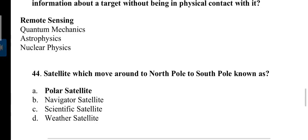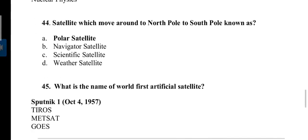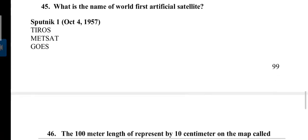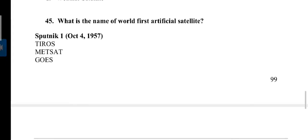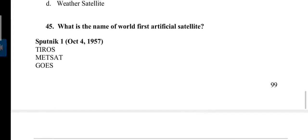It is widely used in agriculture to collect soil moisture data, water resource mapping, and also used in land use monitoring systems. Next question: Satellite which moves around from north pole to south pole is known as polar satellite. What is the name of the world's first artificial satellite? Sputnik 1, released by Soviet Union, October 4, 1957.